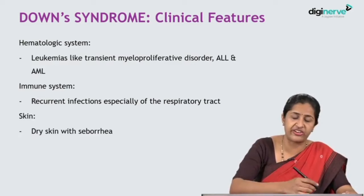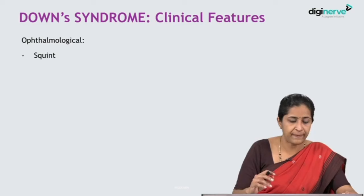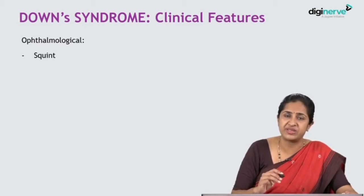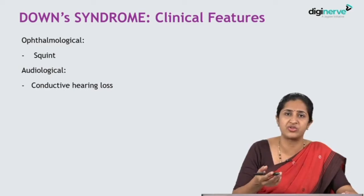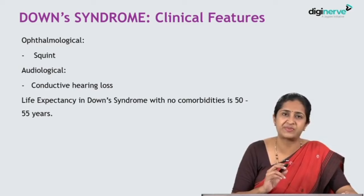The immune system shows transient issues wherein children have recurrent infections especially of the respiratory tract — sinusitis, otitis media, pharyngitis, nasopharyngitis. The skin is usually dry with seborrhea and flaking dandruff. Ophthalmological features include squint, strabismus, nystagmus, cataracts, and refractive errors. Audiologically, children have conductive hearing loss, which can be because of recurrent infection producing serous otitis media.